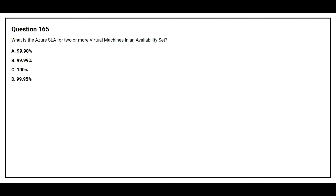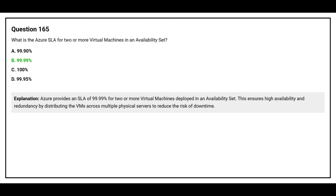Question 165. What is the Azure SLA for two or more virtual machines in an availability set? Options: 99.90%, 99.99%, 100%, or 99.95%. The correct answer is 99.99%. Azure provides an SLA of 99.99% for two or more virtual machines deployed in an availability set, ensuring high availability by distributing VMs across multiple physical servers to reduce the risk of downtime.